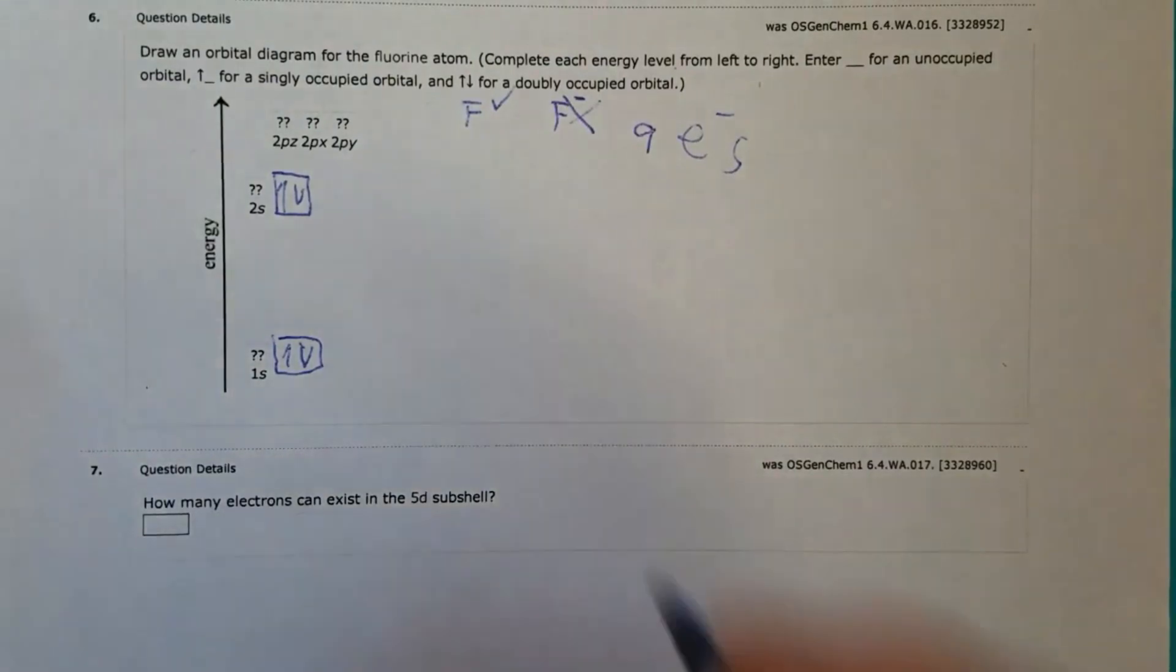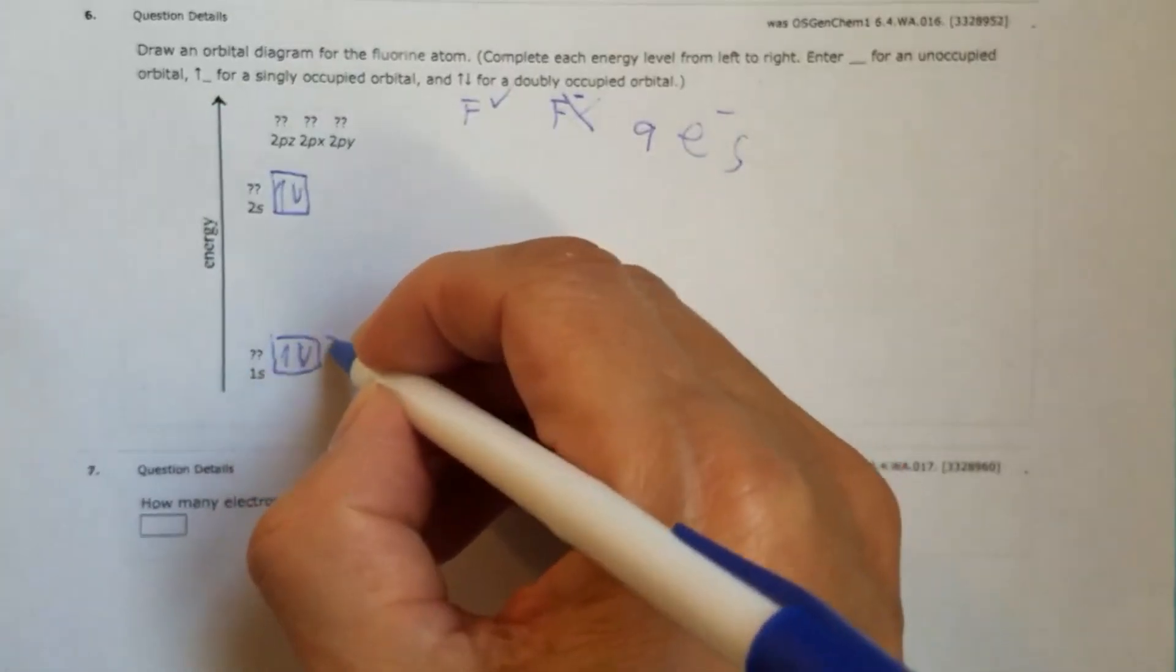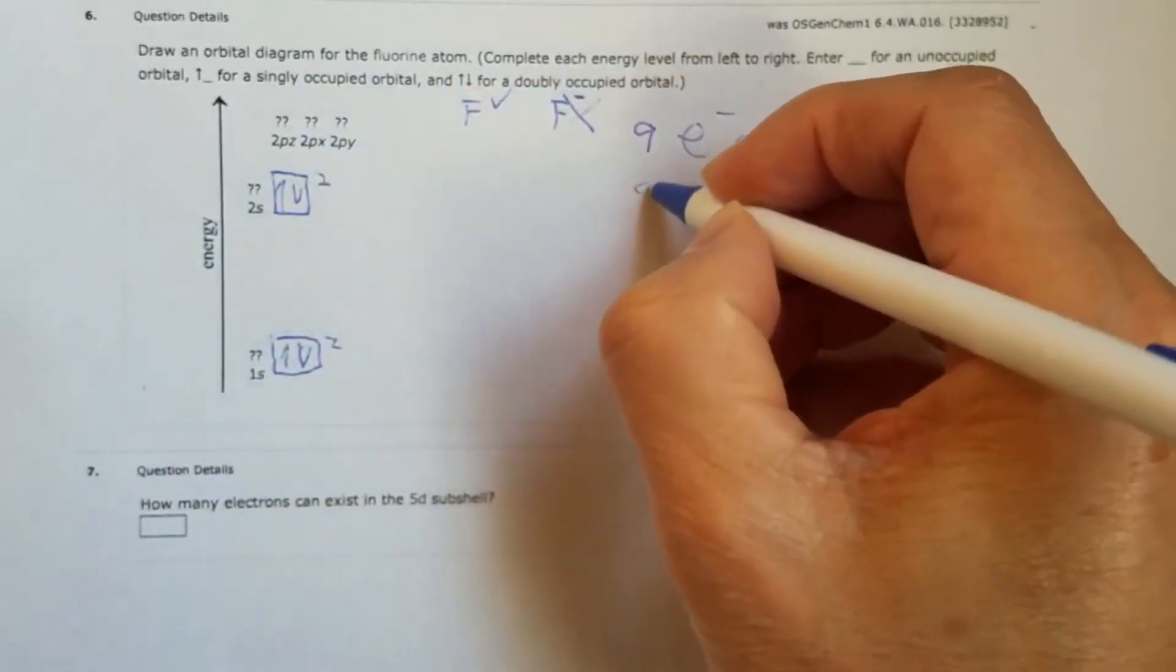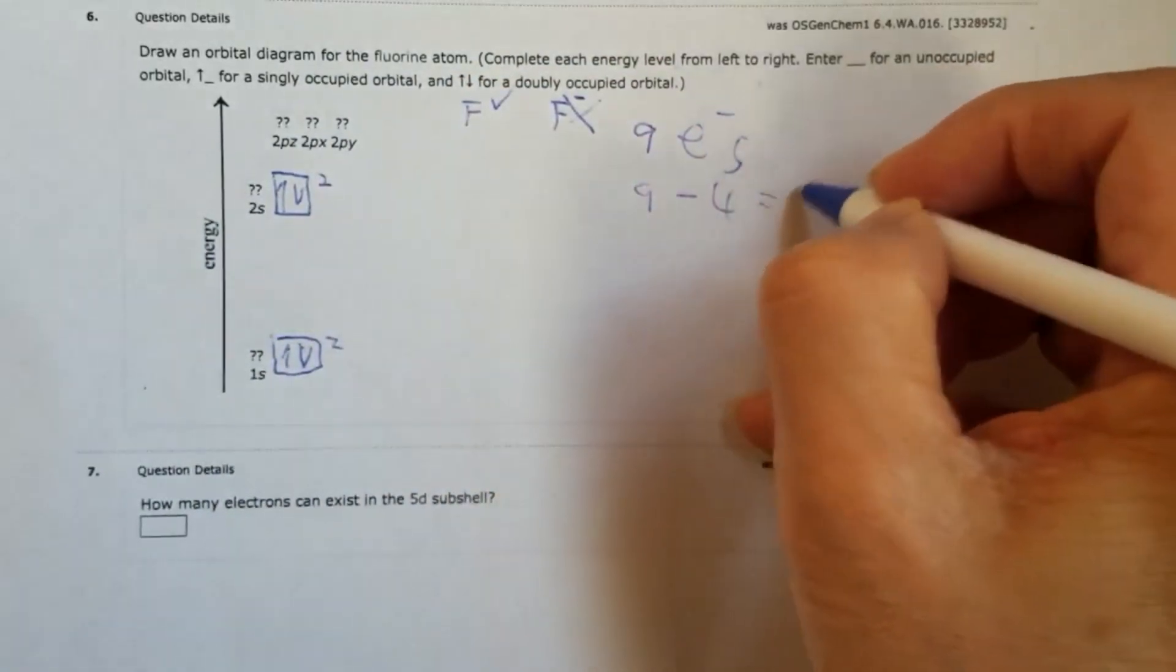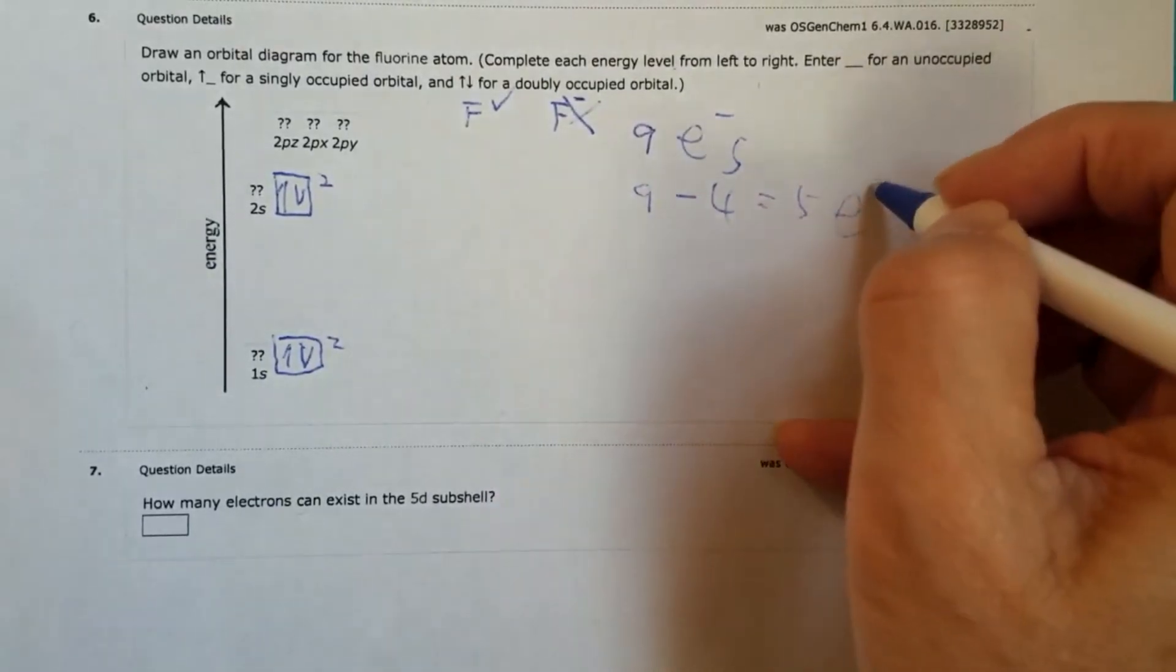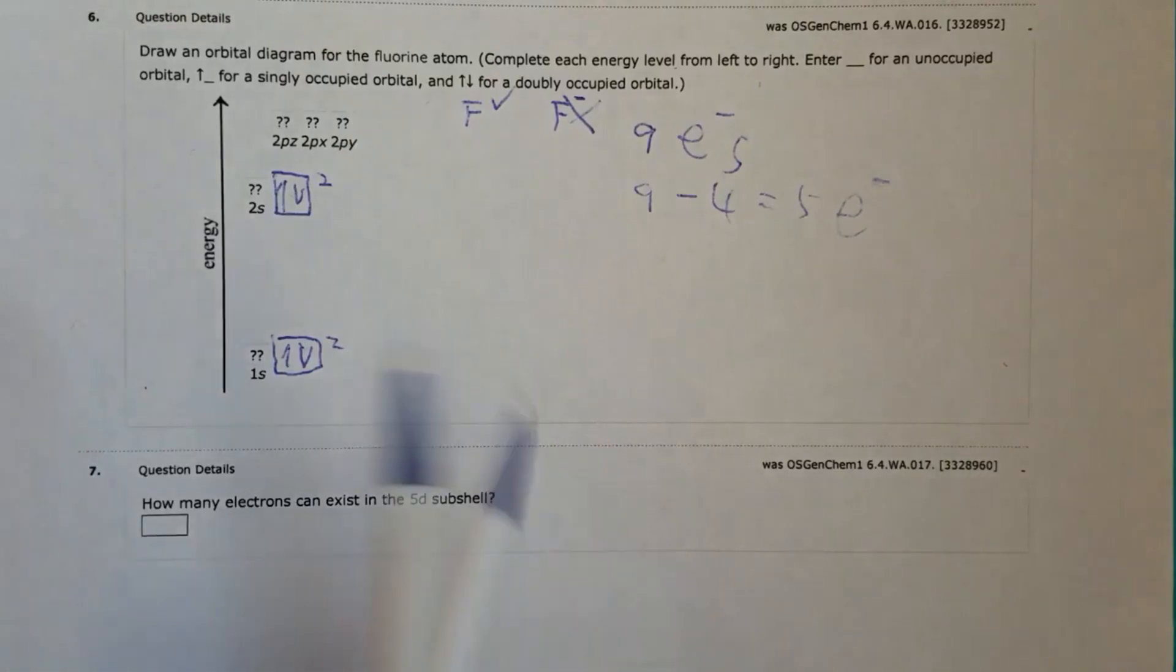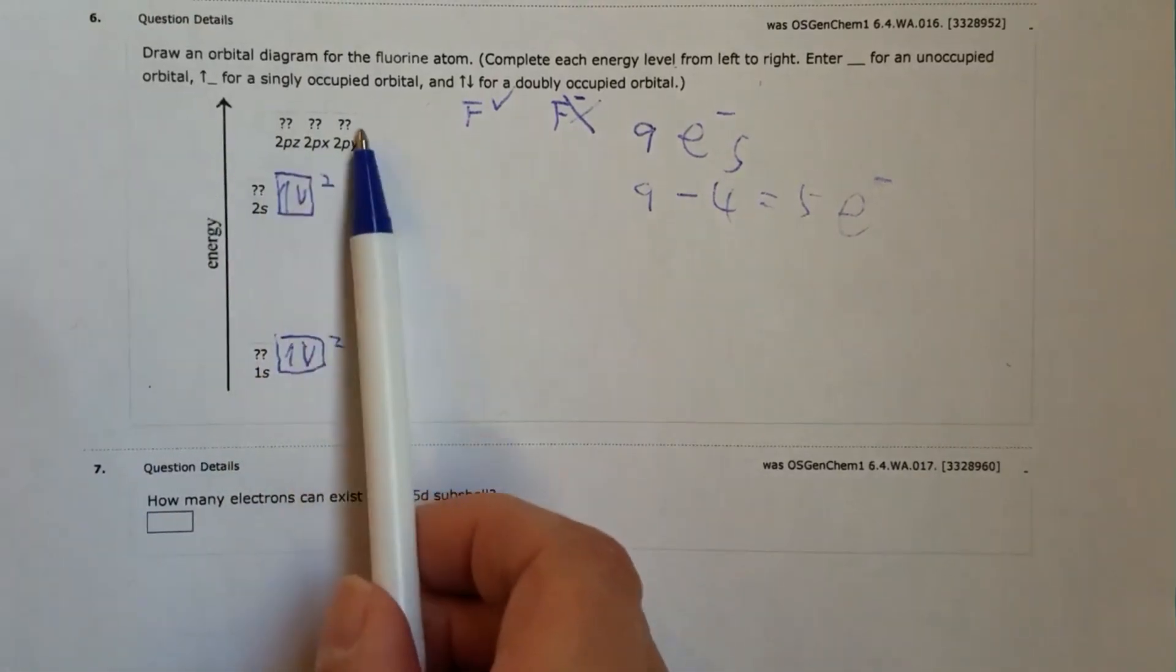Okay, now for the 2p, you see that's already two electrons. That's another two. That's total of four already. Nine minus four equals five electrons. So five electrons will try to place them into three of the 2p orbitals.